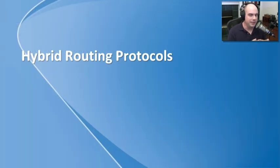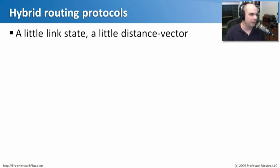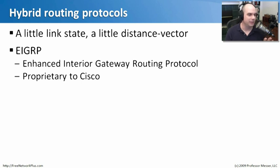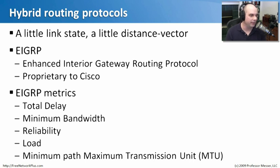If a routing protocol doesn't fall into distance vector or link state, it may use aspects of both — these are called hybrid routing protocols. The primary hybrid routing protocol is EIGRP, the Enhanced Interior Gateway Routing Protocol. It is a proprietary link state and distance vector protocol from Cisco. It combines the ease of use of distance vector configuration with the flexibility of link state protocols. EIGRP looks at total delay, minimum bandwidth, reliability, and load, tracking those statistics to determine the best link, all with very little configuration required.